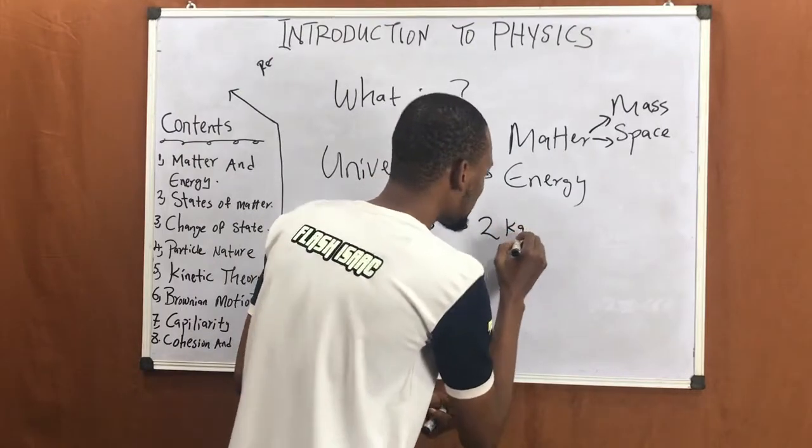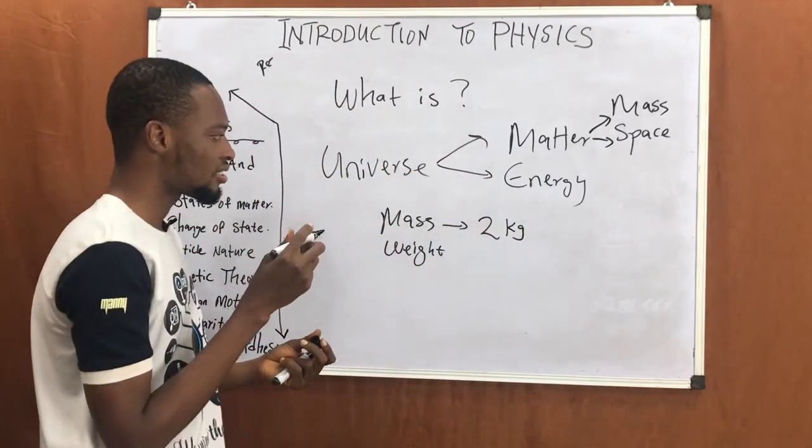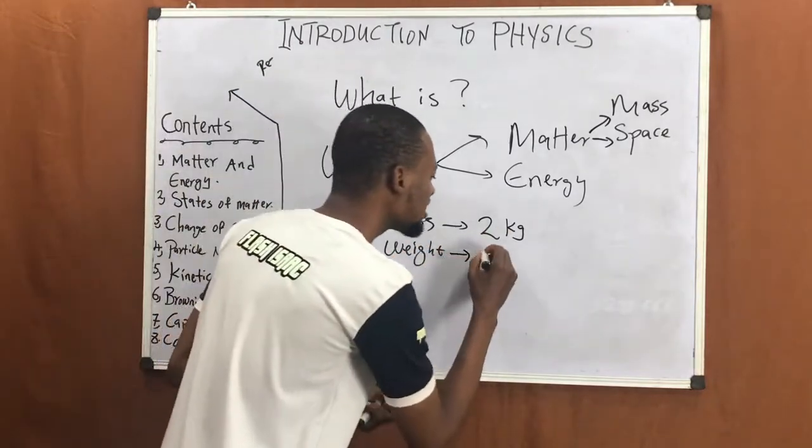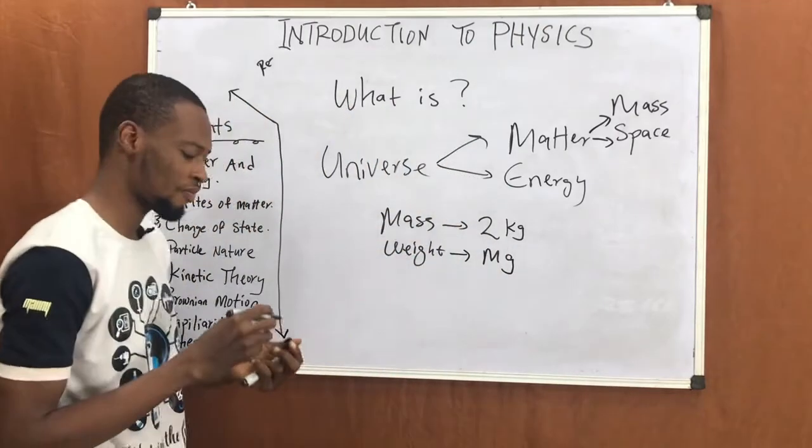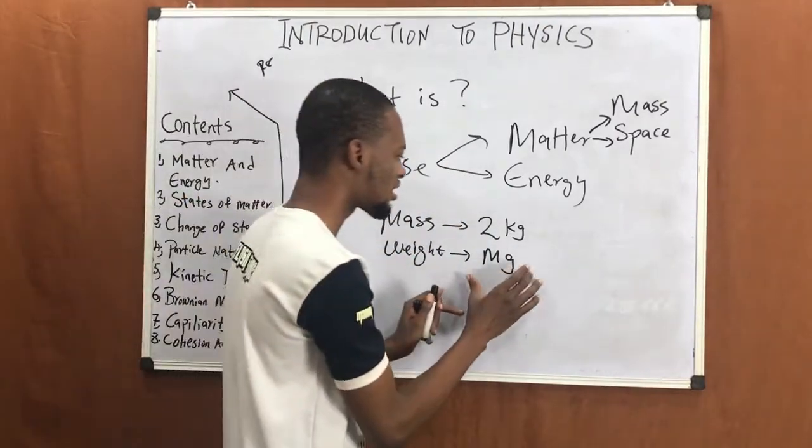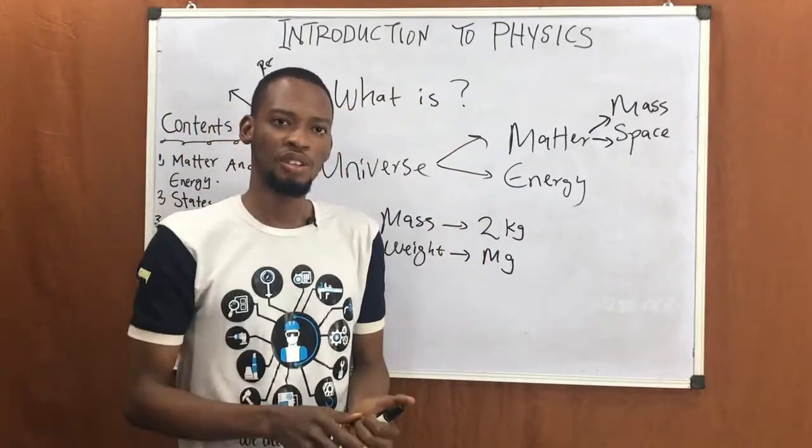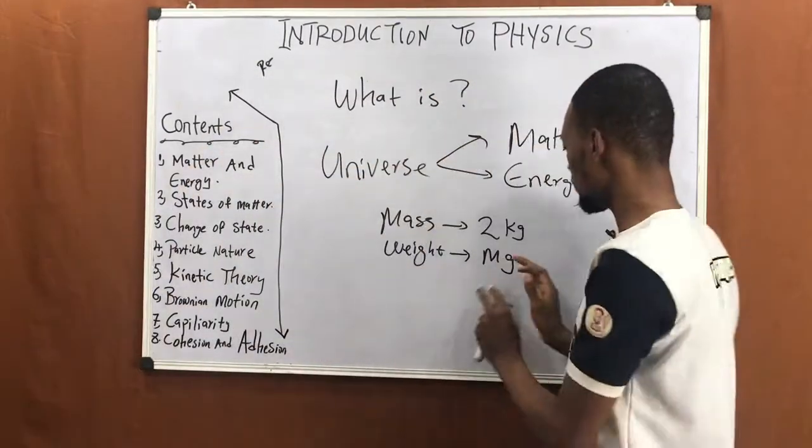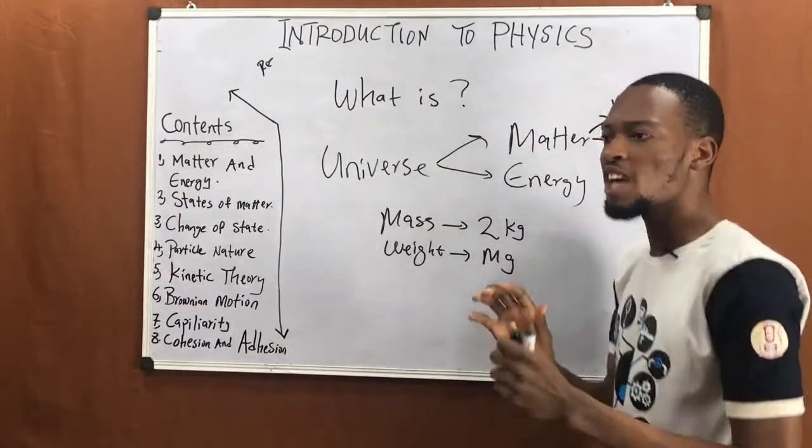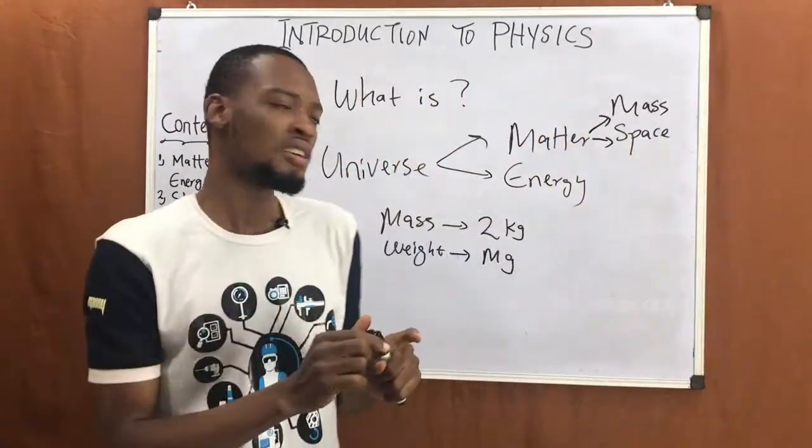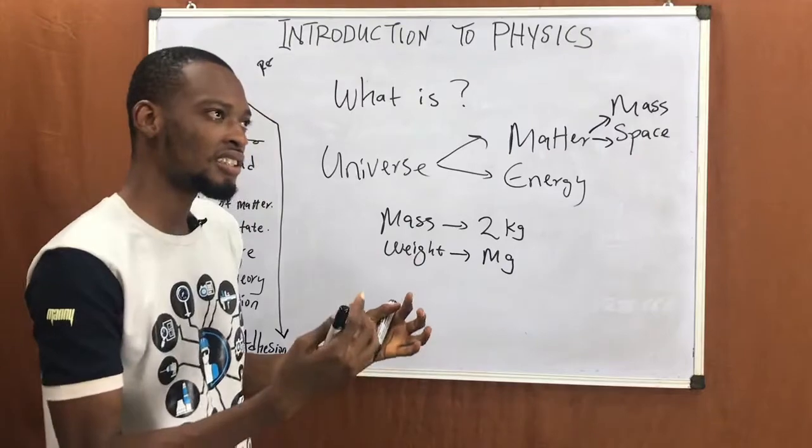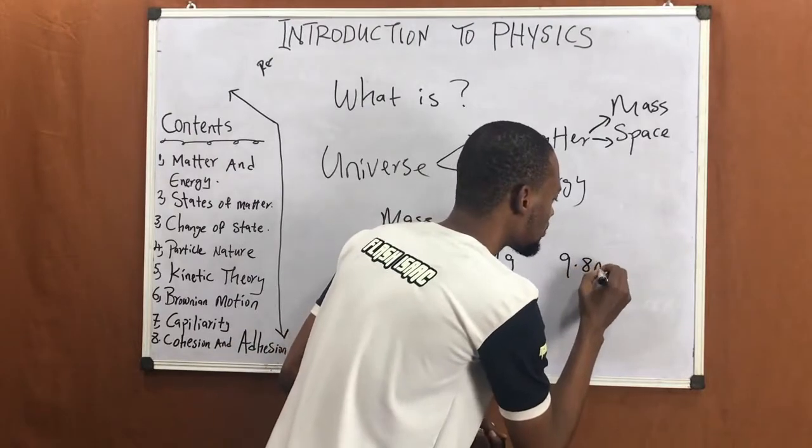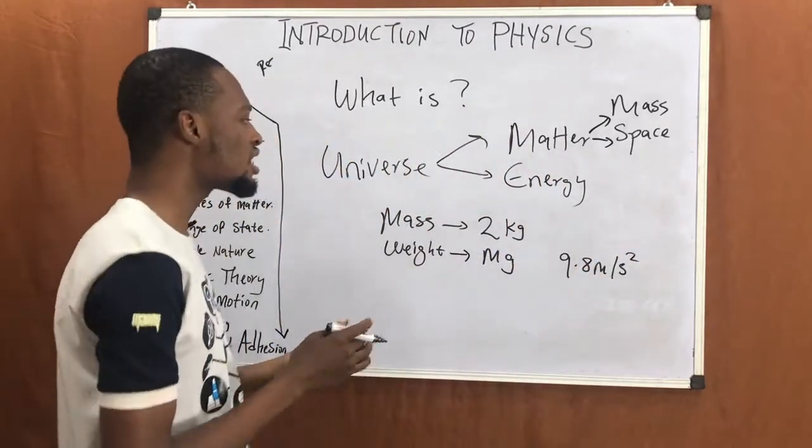For example, if you have two kg, let's say rice, two kg—that is mass. The weight is the mass times gravity. This gravity is a force that brings objects down. When you throw this up, it comes down. So that force bringing all objects down is gravity. Now gravity is different in different places. On Earth, or around us, gravity is approximately 9.8 meters per second squared.